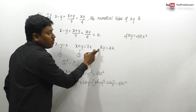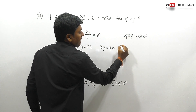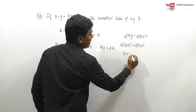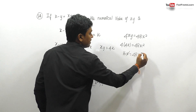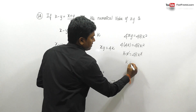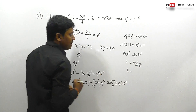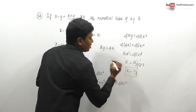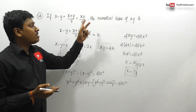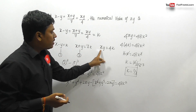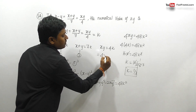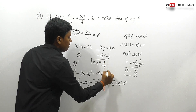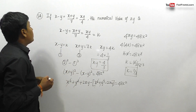We know xy = 4k, so substituting: 4 × 4k = 48k², giving 16k = 48k². Cancelling k from both sides: k = 16/48 = 1/3. Now substituting back: xy = 4k = 4 × (1/3) = 4/3. The answer for question 24 is 4/3.